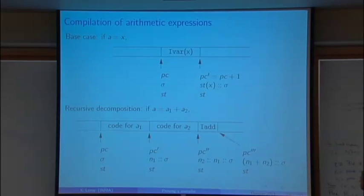And again, so that's a graphical illustration of what happens when you run that code. So for instance, if a equals x, you just run var of x. And indeed that pushes the value of x. And then here is an example of recursive decomposition. So for a one plus a two, you've generated the code for a one that pushes the value n one of a one. And the code for a two that pushes the value n two of a two on top of that. And the final add instruction that does exactly what you want.